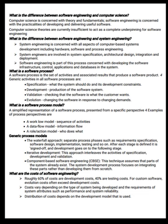What is the software process? The software process is the set of activities and associated results that produce a software product. Four generic activities in all software processes are: specification — what the system should do and its development constraints; development — production of the software system; validation — checking that the software is what the customer wants; and evolution — changing the software in response to changing demands.